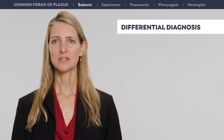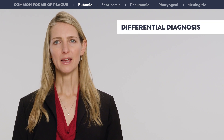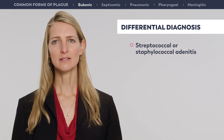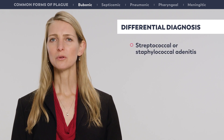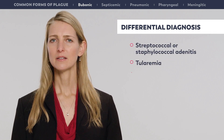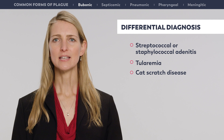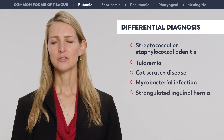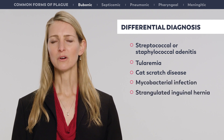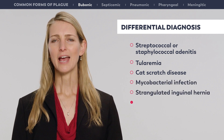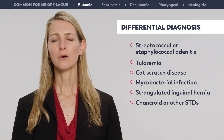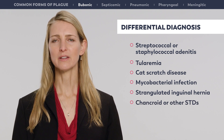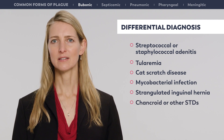Differential diagnosis for bubonic plague includes streptococcal or staphylococcal adenitis, tularemia, cat scratch disease, mycobacterial infection, strangulated inguinal hernia, and chancroid or other sexually transmitted diseases that cause regional lymphadenitis.